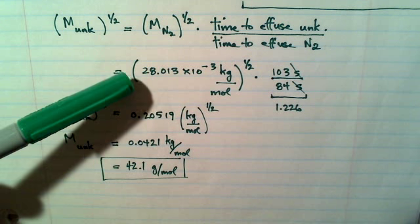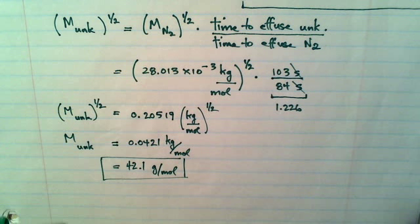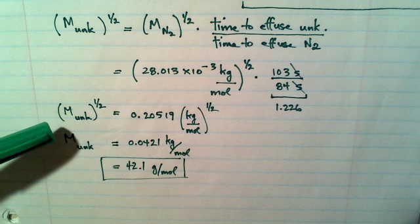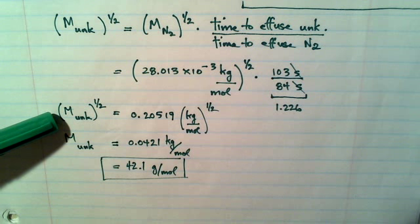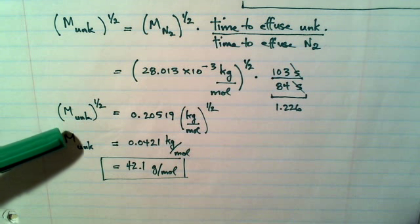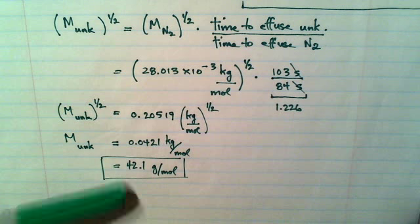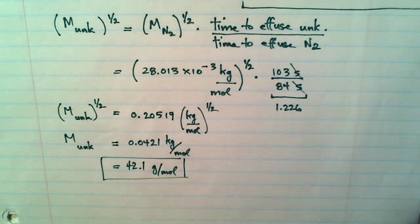The square root of this number is 0.20519, so that is 0.20519 is the square root of the molar mass of the unknown gas. And so if I square that number, I will get the answer in kilograms per mole, and then multiplying it by 1,000, I get my answer in grams per mole. So the molar mass of the unknown gas is 42.1 grams per mole.